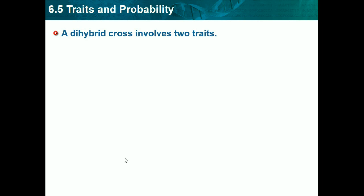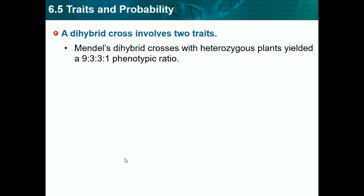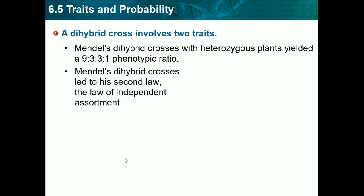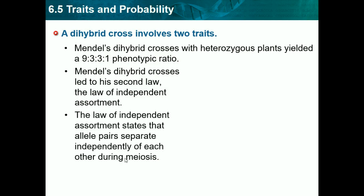A dihybrid cross involves two traits — it's not as simple as a monohybrid, but it's still doable. Mendel's dihybrid cross with two heterozygous plants yields a 9 to 3 to 3 to 1 ratio. This is a ratio we have to know — it's very important and comes up on tests very often. Mendel's dihybrid cross led to his second law, the law of independent assortment, which states that alleles separate independently of each other during meiosis. We'll get to the 9 to 3 to 3 to 1 ratio here.